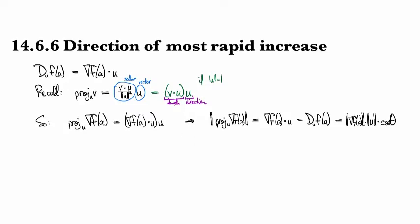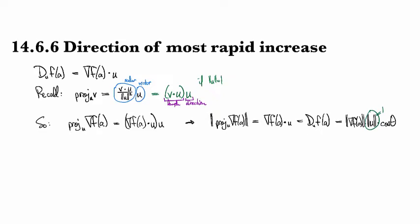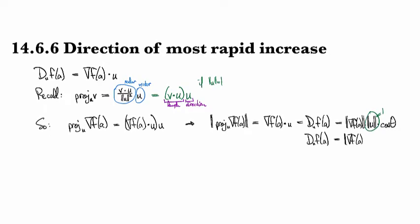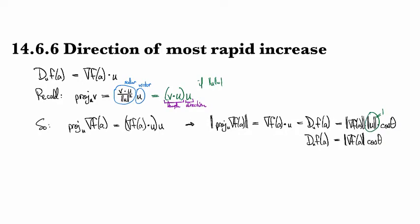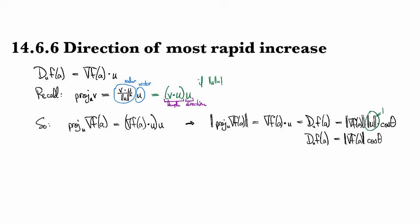Okay, and so since we're looking at the unit vector, that term is just equal to 1, and we end up with the directional derivative of f being equal to magnitude of the gradient times the cosine of the angle between the gradient and the direction that you want to go in.